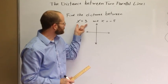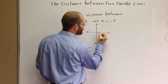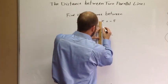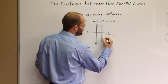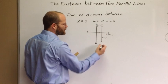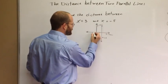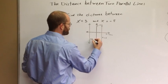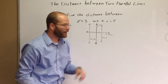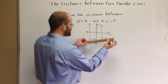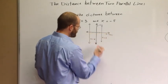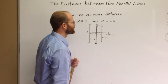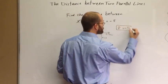The line x equals 3 is a vertical line, 3 units to the right of the y-axis. The line x equals negative 5 is back to the left. Since these are both vertical lines, the distance between them will be measured along a horizontal segment — the easiest place is on the x-axis. Graphically we can simply count: this is 5 units here and 3 units here, so the distance between them is 8 units.